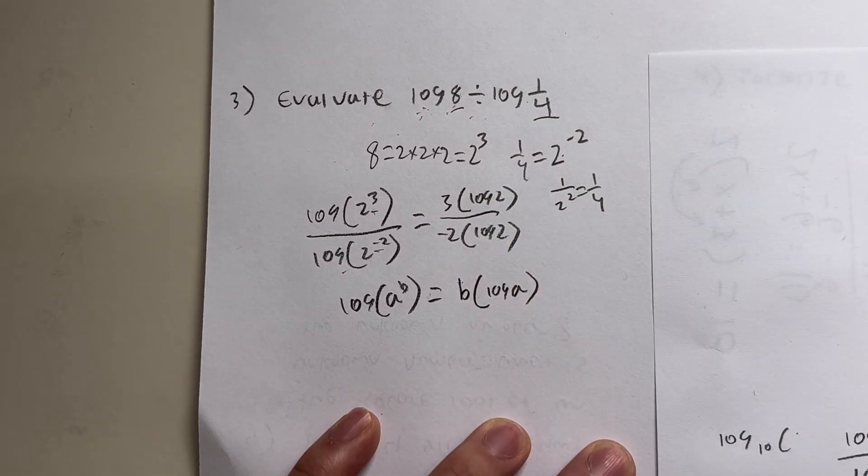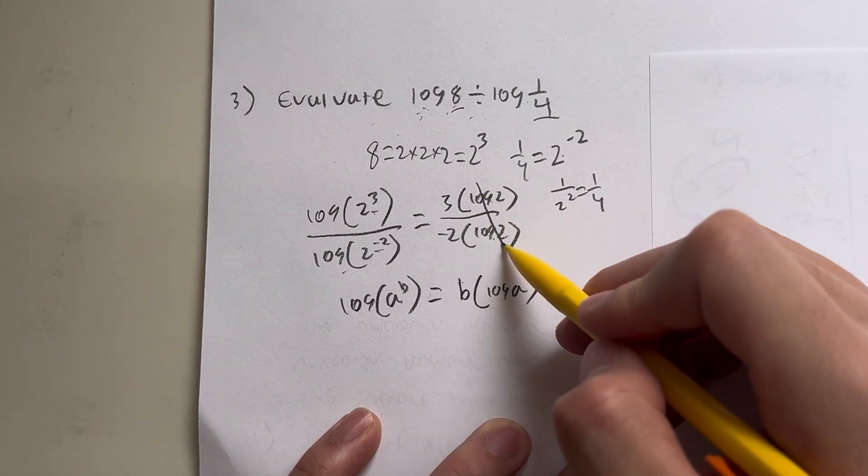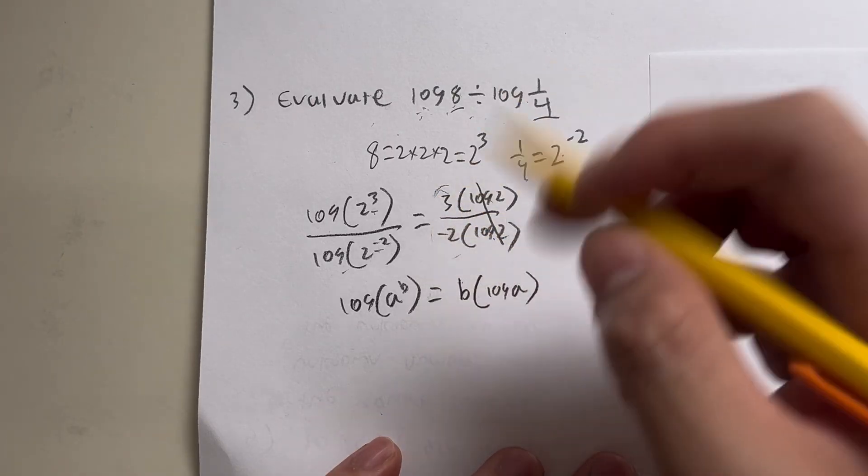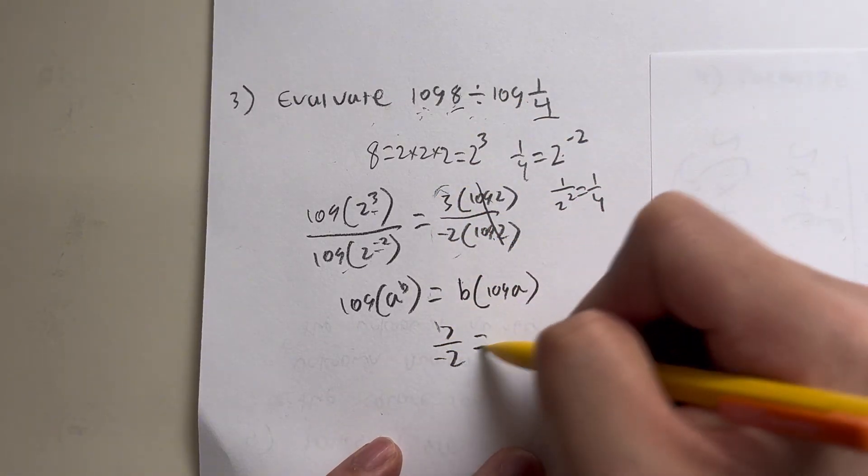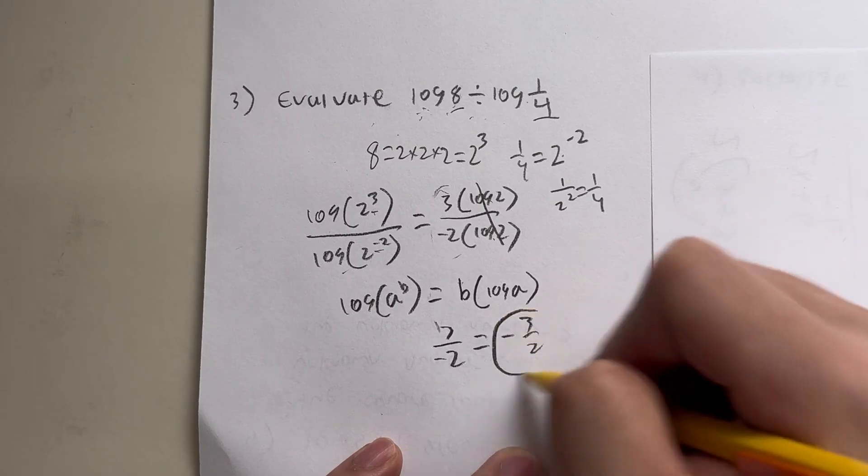And this is pretty easy to solve, because the log of 2 and log of 2 cancel out, just leaving you with what's here, which is just 3 over negative 2, which is the same as negative 3 over 2 as your answer.